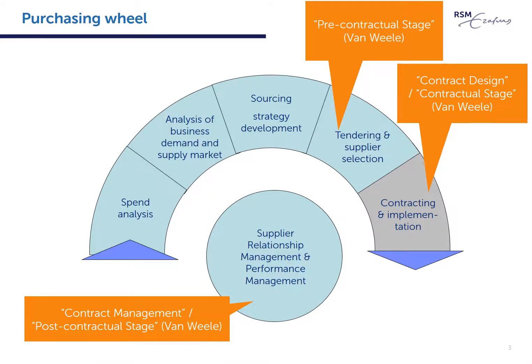In his college tour video on Contracts and Contract Management, Van Wehle defines three stages related to contracting: the contractual, the pre-contractual, and the post-contractual stages. In this slide you can see how these three stages are related to the process from the PSM wheel. Note that Van Wehle explicitly uses capital expenditure or project-based acquisitions, such as major engineering and construction projects, as the setting for his review of contracts, but the terminology can be applied to other purchase situations as well.